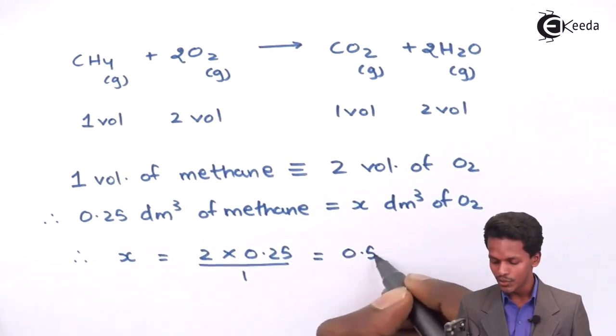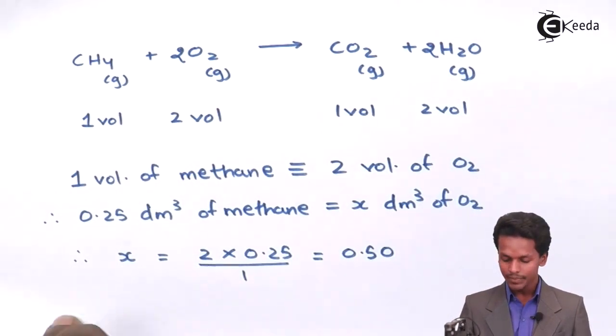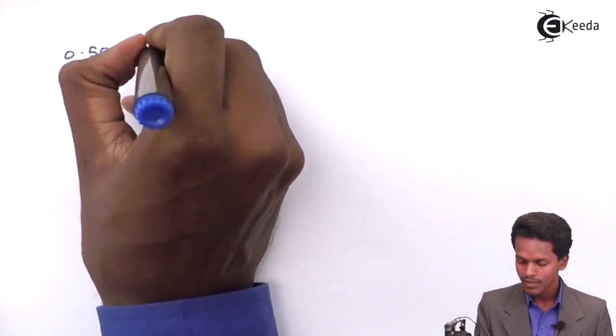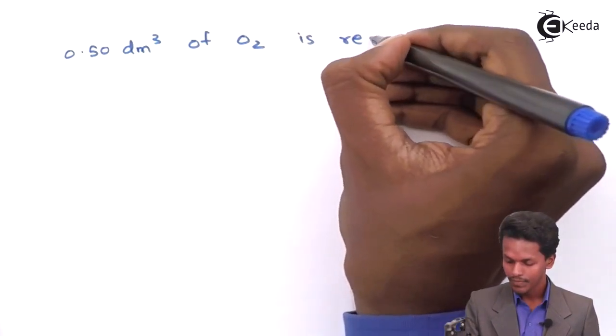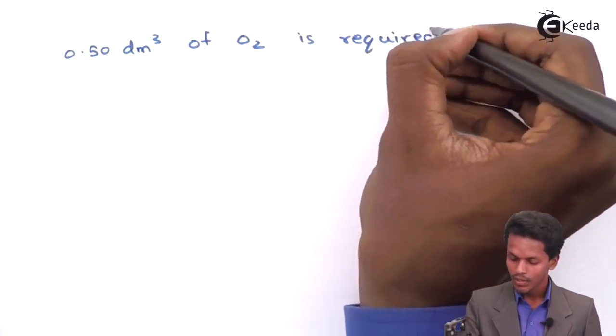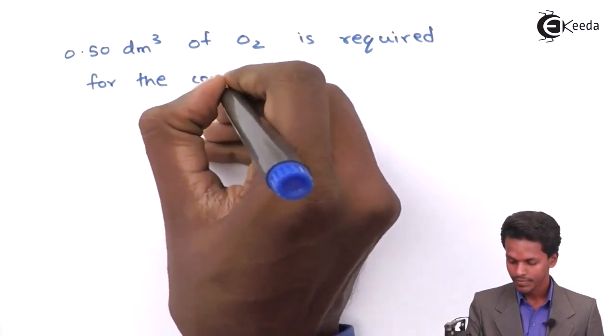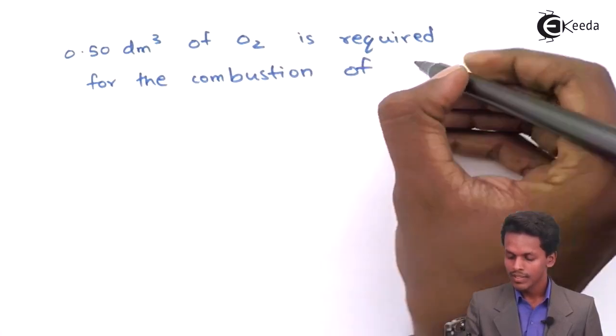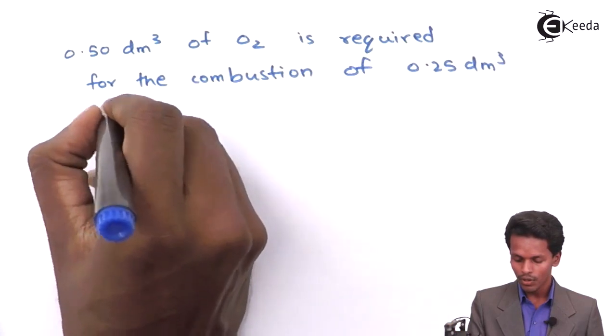So, I could write in a very clear statement, that, 0.50 dm³ of oxygen molecule is required for the combustion of 0.25 dm³ of methane.